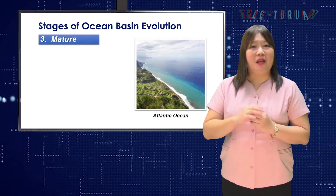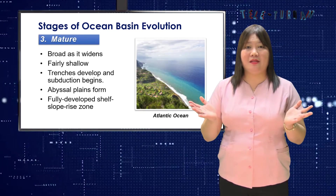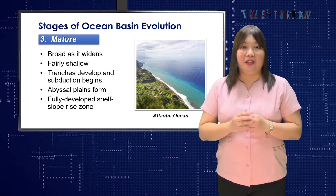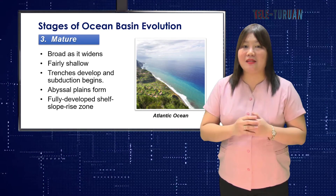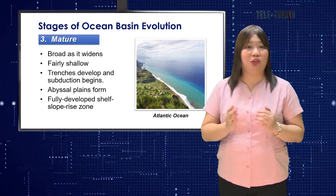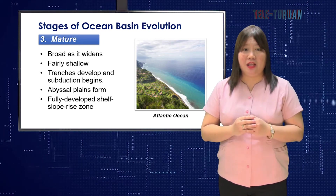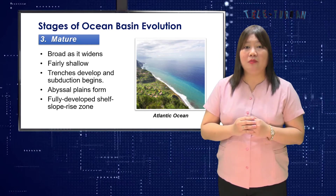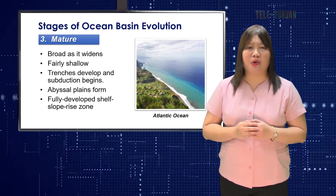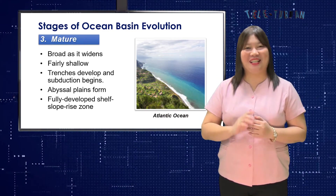In Stage 3, the mature ocean basin becomes broad as it widens. Trenches develop and subduction begins. The ocean floor between the spreading axis and the continent subsides by thermal contraction of the underlying lithosphere. Abyssal plains form and the continental shelf-slope-rise zone becomes fully developed. The continental margins are more or less parallel to the central spreading ridge, as in the Atlantic Ocean.